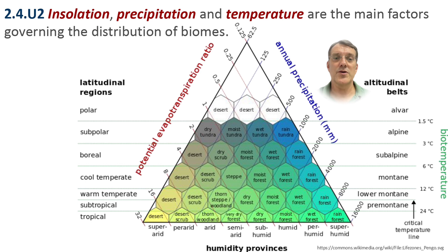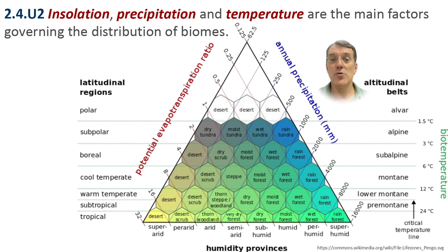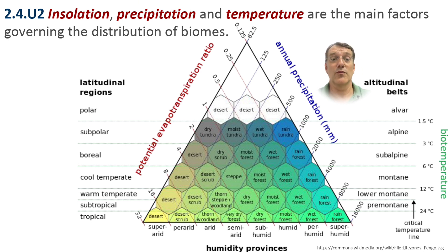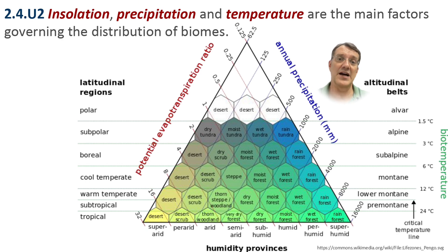This triangular diagram shows how the interaction of temperature, precipitation, and evapotranspiration determines which biome will develop in which location. Moving up the diagram represents increased moisture, while moving right represents increases in temperature. Each combination of these factors creates conditions suited for a specific biome type.